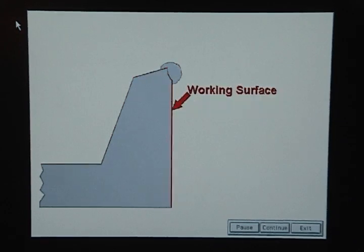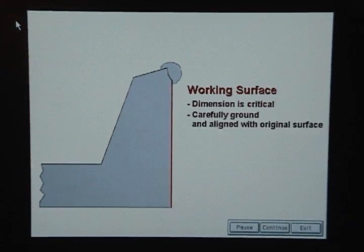The face of the trim steel, however, is a working surface, and maintaining its dimension is critical. Here, the excess weld must be carefully ground so that it is aligned with the original working surface.